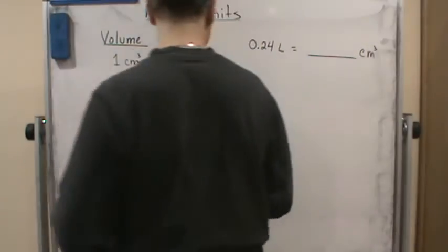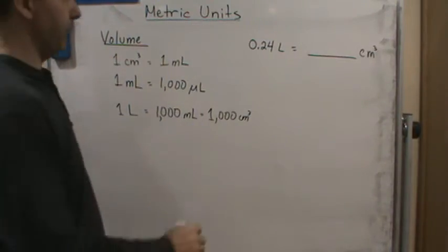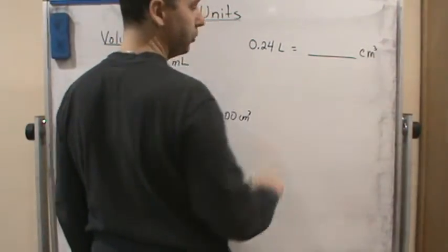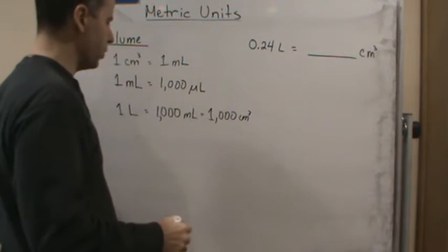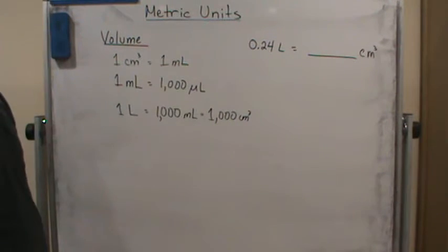So what if we had something like this? Here's an example. We had 0.24 liters and we want to convert it into cubic centimeters.